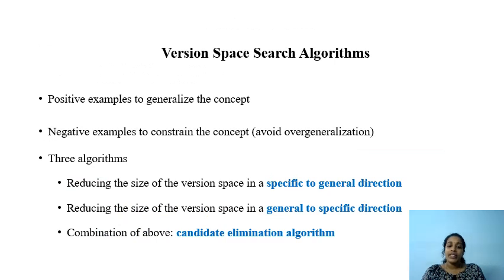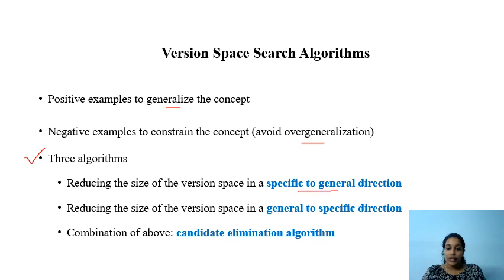There are various algorithms to find the version space. These algorithms use positive examples to generalize the concept and negative examples to remove over-generalization. The three algorithms are: general-to-specific algorithm, specific-to-general algorithm, and the candidate elimination algorithm which uses both directions.